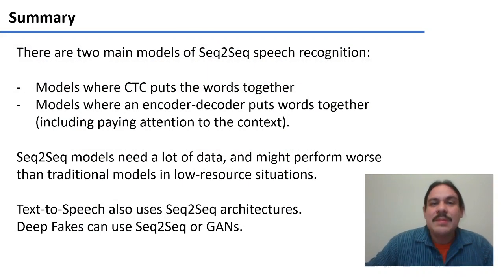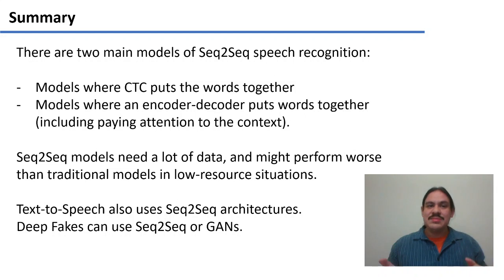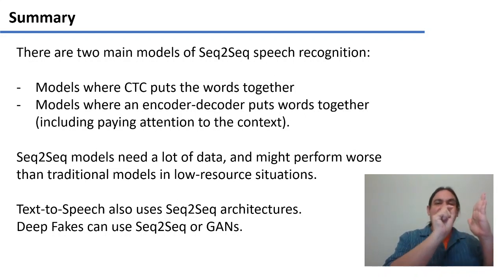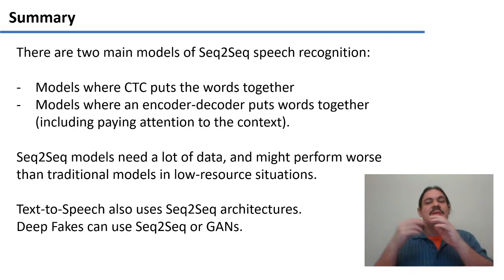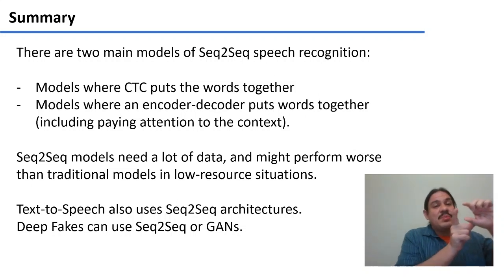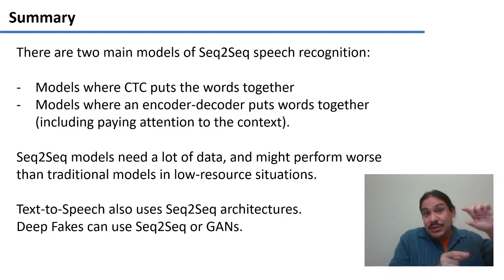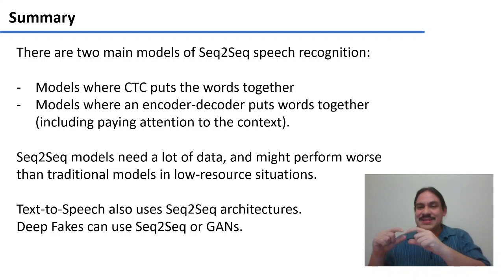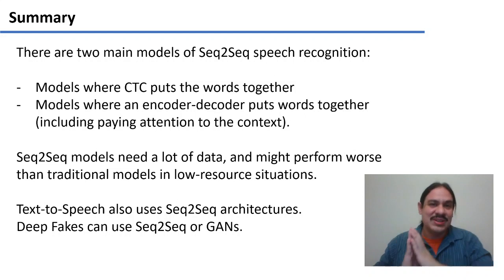In summary, there are two main types of sequence-to-sequence speech recognition. Some systems use CTC to calculate the probability that a certain string of phones corresponds to a certain orthographic word. Other systems use encoder-decoder architectures, including attention to context. In CTC approaches, these probabilities constitute the language model of English; in encoder-decoders, the intermediate forms and how they are decoded represent the knowledge of English.